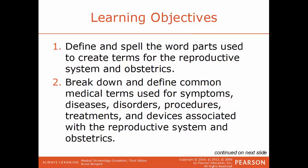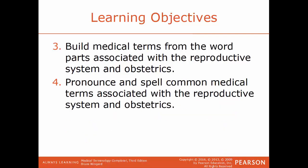Learning objectives for this chapter: define and spell the word parts used to create terms for the reproductive system and obstetrics; break down and define common medical terms used for symptoms, diseases, disorders, procedures, treatments, and devices associated with the system and obstetrics; build medical terms from the word parts; and pronounce and spell common medical terms associated with the reproductive system and obstetrics.